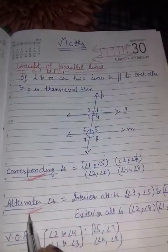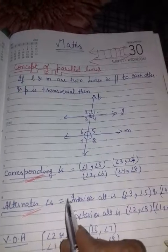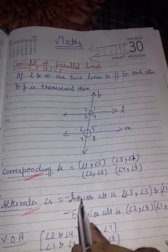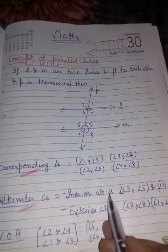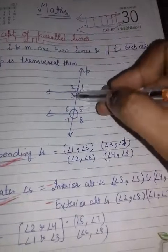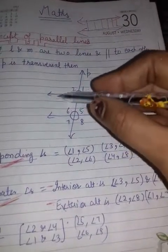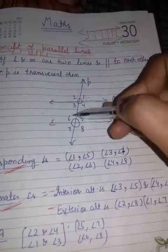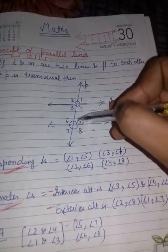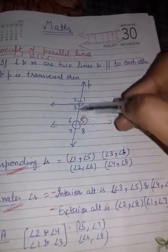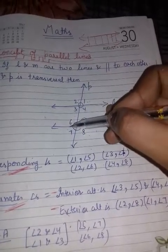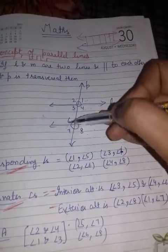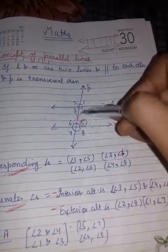The second type is alternate angles, which are totally different in position. Alternate angles are divided into two types: interior alternate and exterior alternate. Interior alternate angles — for example, angles 3 and 5. Angle 3 is on line L, on the left side and downside. Angle 5 is on the upside and right side — totally different positions. Similarly, angle 4 and angle 6 are alternate interior angles: angle 4 is on the right side and downside; angle 6 is on the left side and upside. These two pairs are known as alternate interior angles.